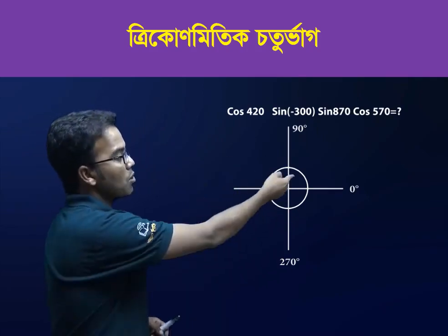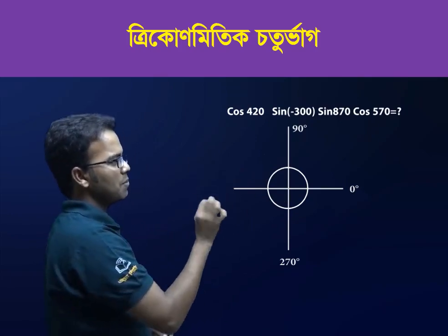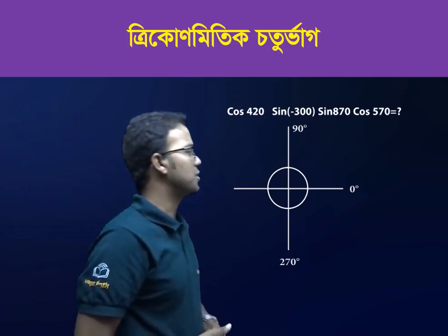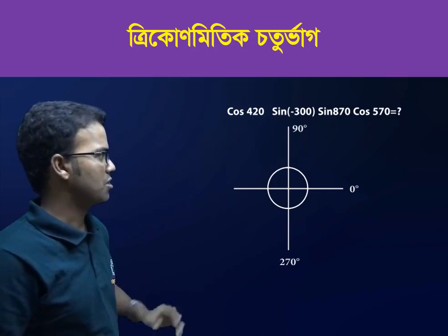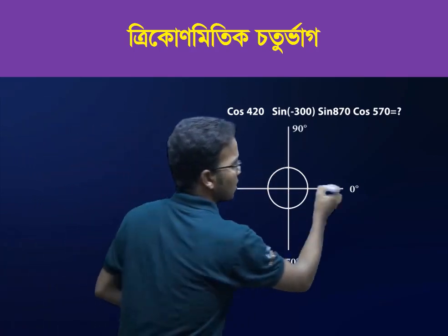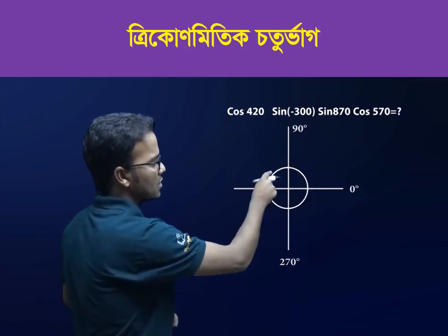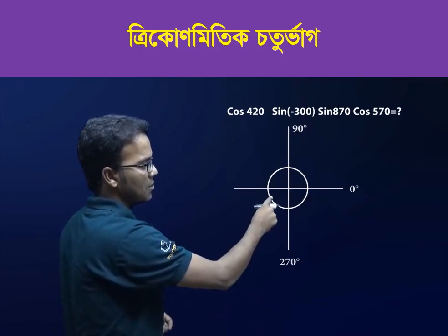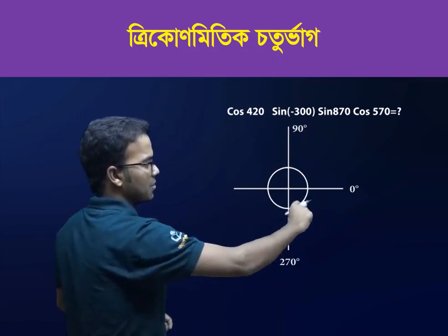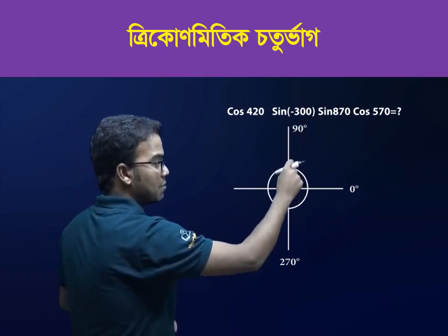So, this quadrant concept — we have to know that we have a simple logic that we have to understand. This quadrant is normally 4. The first quadrant, the third quadrant — the third quadrant is 4. So, this quadrant is positive and negative: K-positive and K-negative.